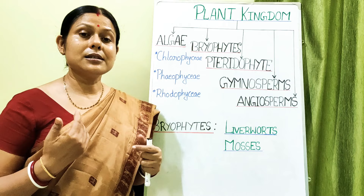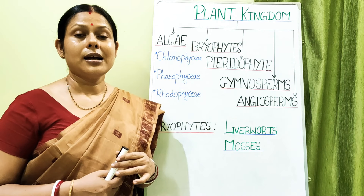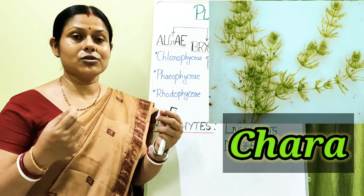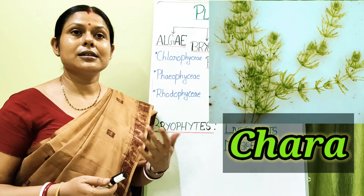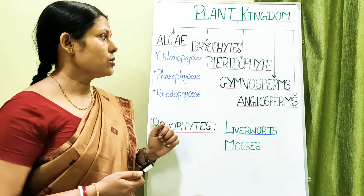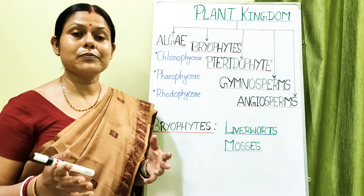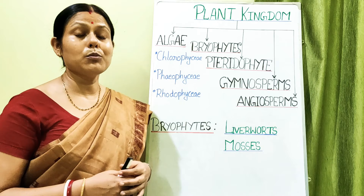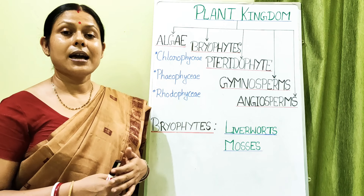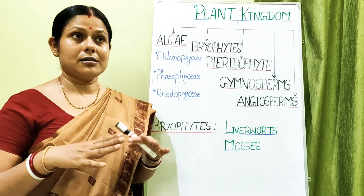Some Chlorophycean members grow in moist soil, like Chara, which has leaf-like appendages growing on a stem-like structure and can grow in damp or moist soil. Chlorophycean members are basically freshwater organisms, but some may also grow in marine ecosystems or in moist soil conditions.